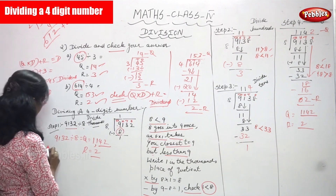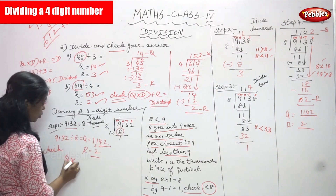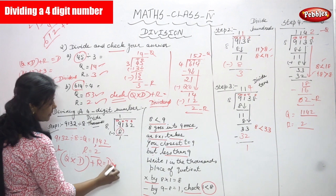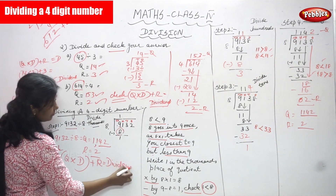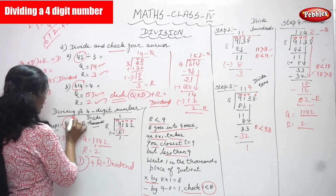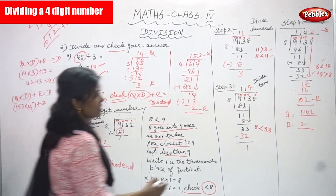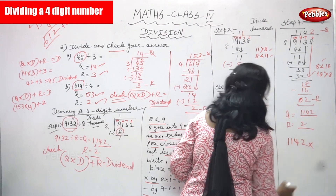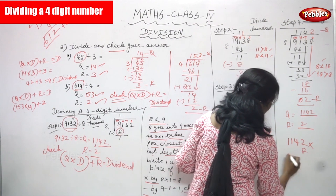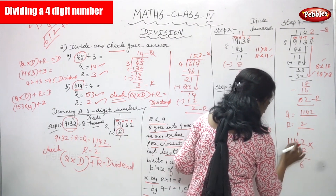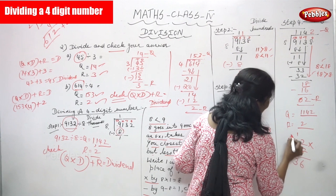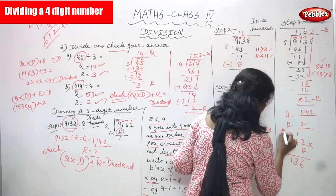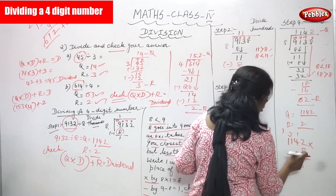The check method is: quotient into divisor (in brackets) plus remainder equals the dividend — that is, equals the original question 9132. So quotient is 1142, into divisor 8. Multiply: 8 twos are 16, carry 1; 8 fours are 32, plus 1 is 33, carry 3; 8 ones are 8, plus 3 is 11, carry 1; 8 ones are 8, plus 1 is 9. Result: 9136.